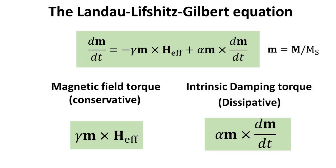On the other hand, the dissipative torque accounts for energy dissipation and represents the effects of damping in the system. It introduces a damping parameter, alpha, known as the Gilbert damping coefficient, which characterizes the rate at which energy is lost as the magnetization evolves over time. This dissipative torque ensures that the magnetization eventually reaches a stable state, aligning with the effective field.